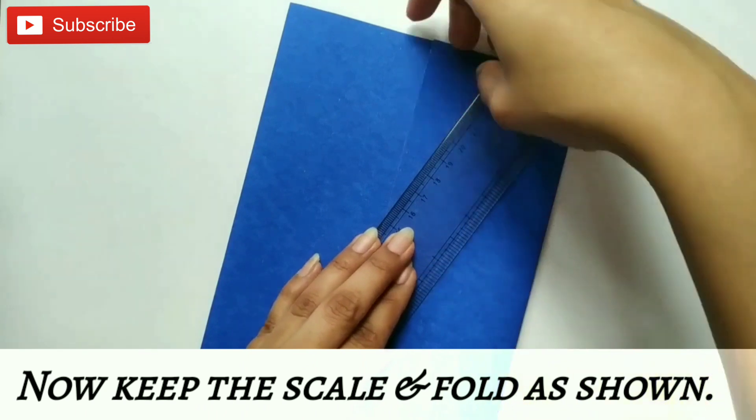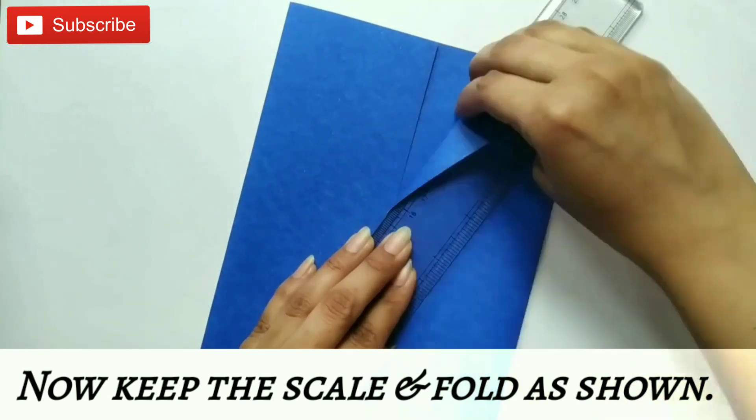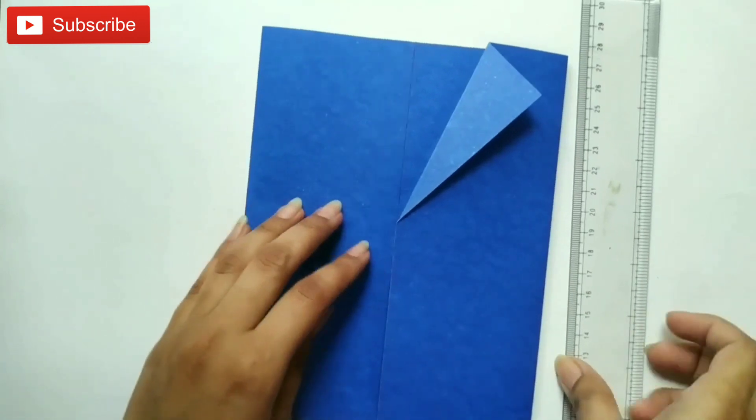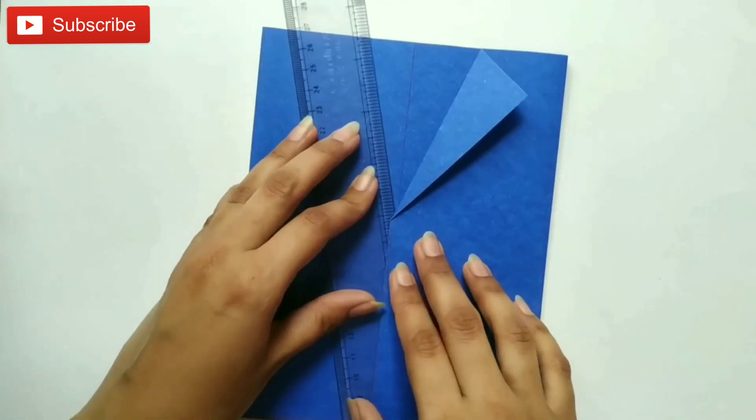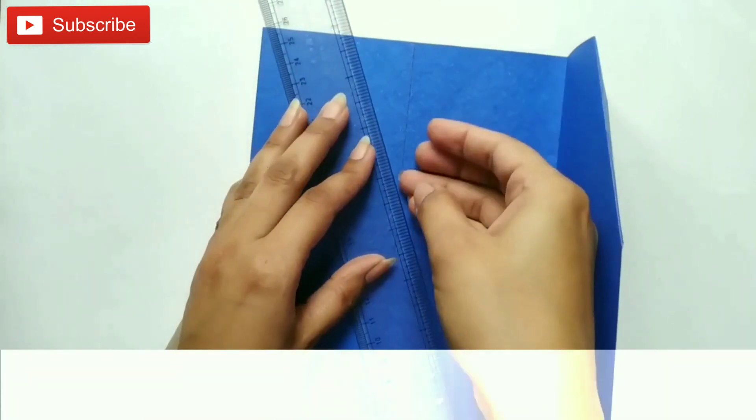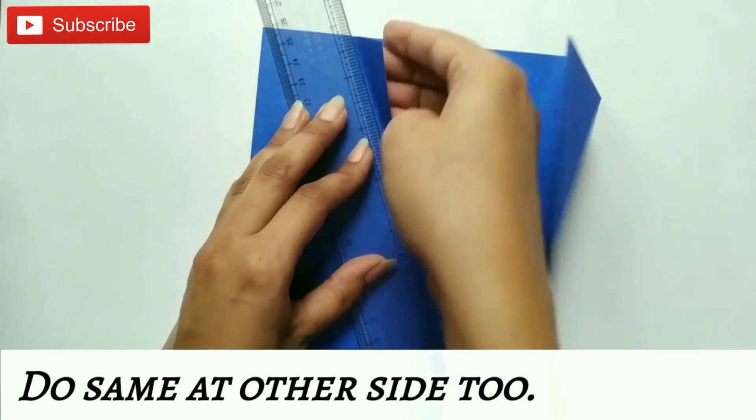Now, keep the scale as shown and fold the sheet to make collar of the blazer. Do same at the other side too.